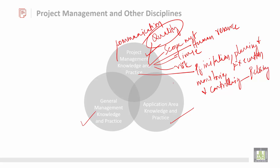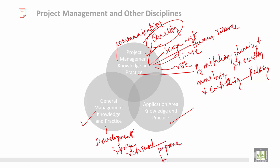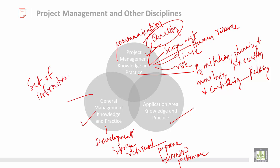On the other hand, general management knowledge and practice mainly talks about development, storage, and retrieval. This all mainly talks about how to improve the business performance. Then it also talks about a set of infrastructures.